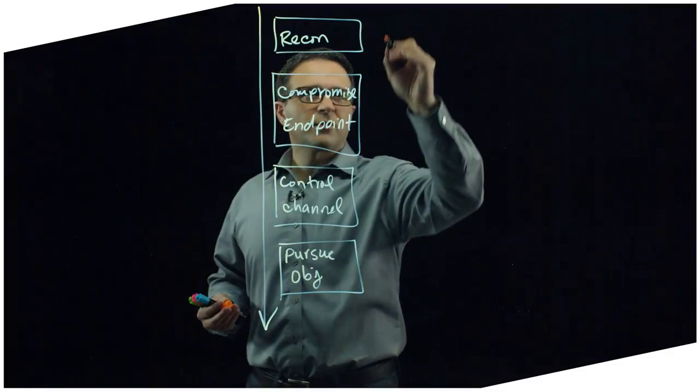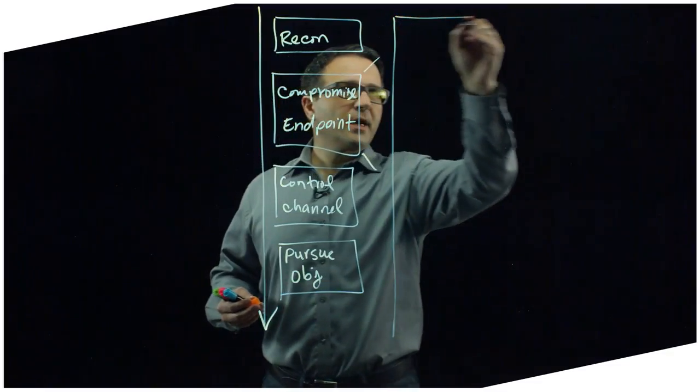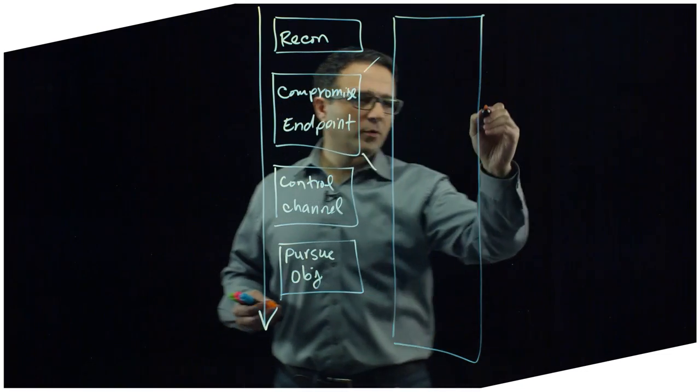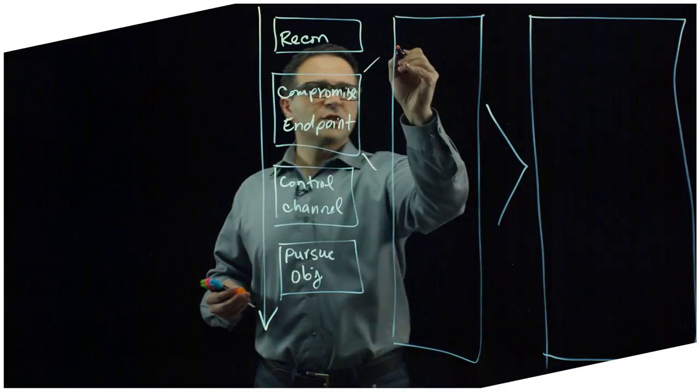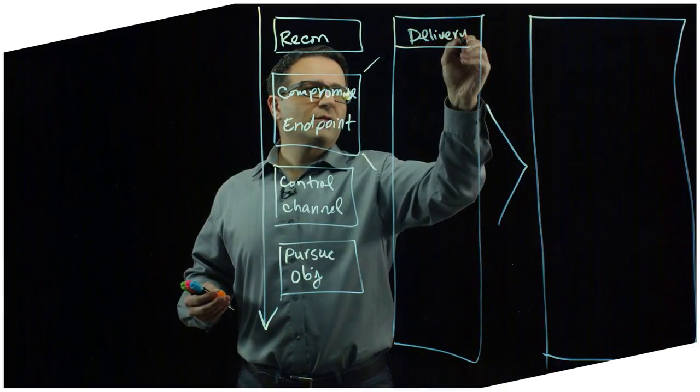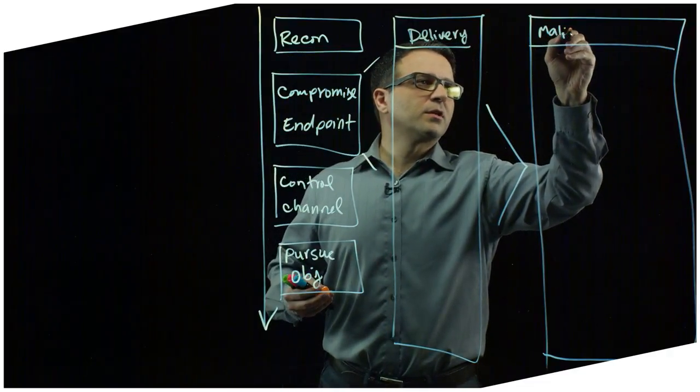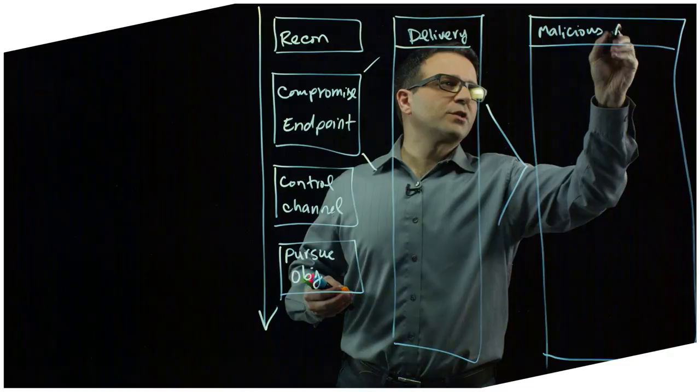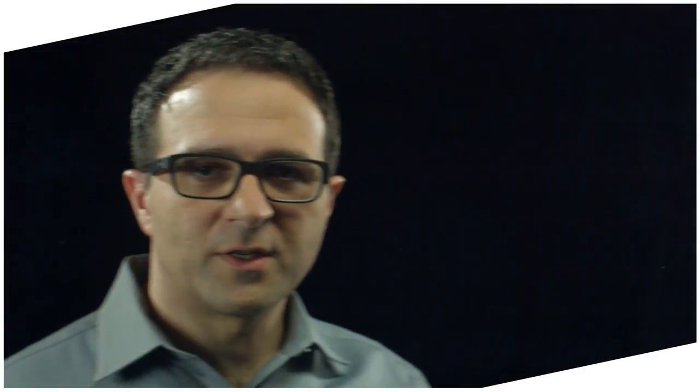Now let's double click on this and see what that looks like. When you look at what it takes to compromise an endpoint, it typically involves two phases. The first phase is where the attacker is delivering whatever that attacking agent is to the endpoint. And the next is to conduct a series of malicious actions in order to compromise the endpoint.